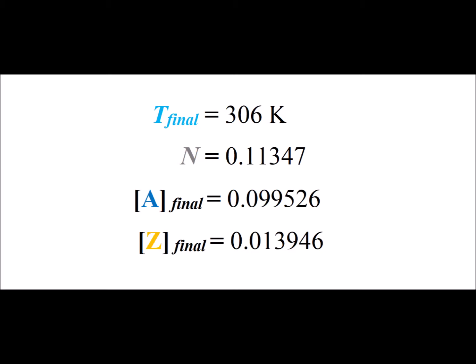At the final temperature of 306 degrees Kelvin, notice that N is still the same, 0.11347. But now the equilibrium concentration of A is 0.99526 molar, and the equilibrium concentration of Z, the product, is 0.013946.